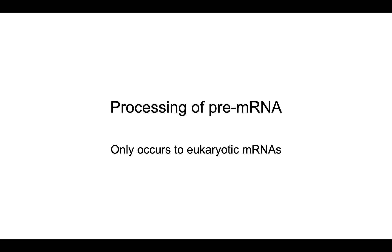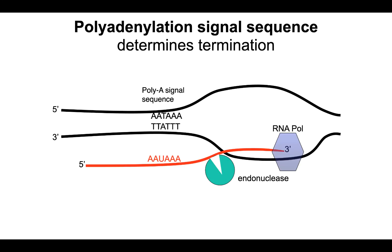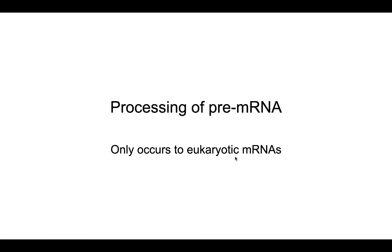This newly made RNA is called a pre-mRNA — it's not completely mature yet. It has several processing events that must occur, and those processing events will be the topic of the next video.